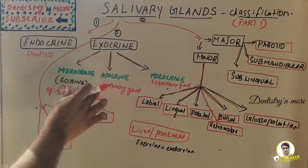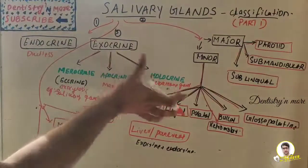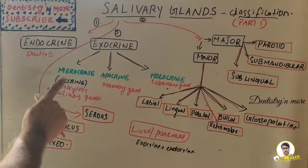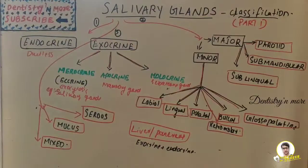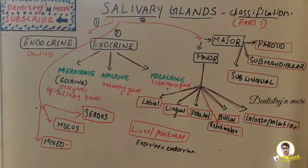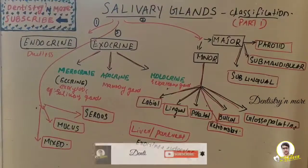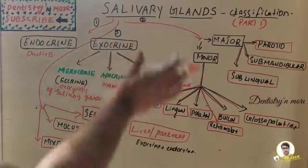So to summarize: merocrine glands secrete by exocytosis, apocrine glands lose a portion of the cell, and holocrine glands have the entire cell disintegrate — seen in salivary glands, mammary glands, and sebaceous glands respectively. Salivary glands are compound tubular acinar merocrine or exocrine glands whose ducts open into the oral cavity, which is kept moist by a film of fluid known as saliva — a very complex fluid produced by the salivary glands.